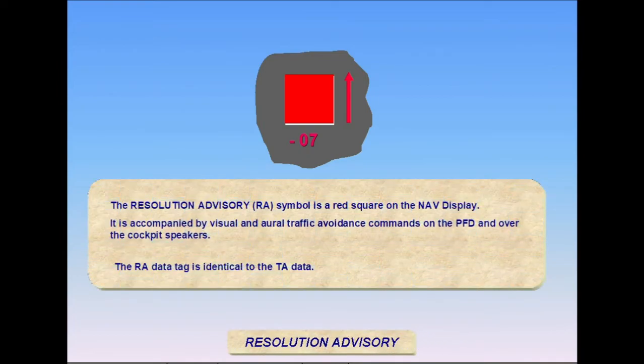A resolution advisory occurs from 15 to 35 seconds before the threat is predicted to enter the TCAS-protected airspace. Its visual symbol is a red square. An RA avoidance command will maintain or increase vertical separation relative to a threat contact. Pilots are authorized to deviate from an ATC clearance to the extent necessary to comply with the TCAS resolution advisory, but should keep altitude deviations to the minimum required to maintain safe separation. When the clear of conflict message is announced, the pilot should return to the previously cleared altitude.